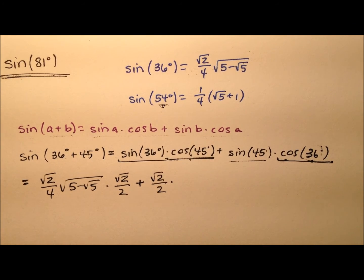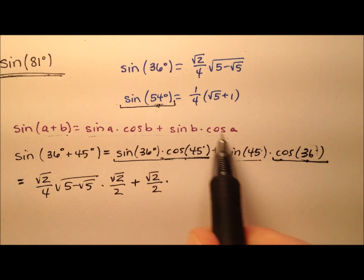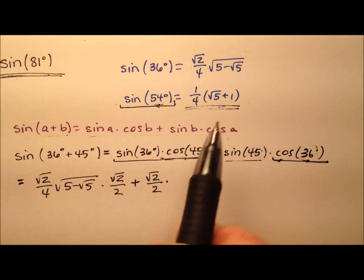So, the sine of 54 and the cosine of 36 will have the exact same values.